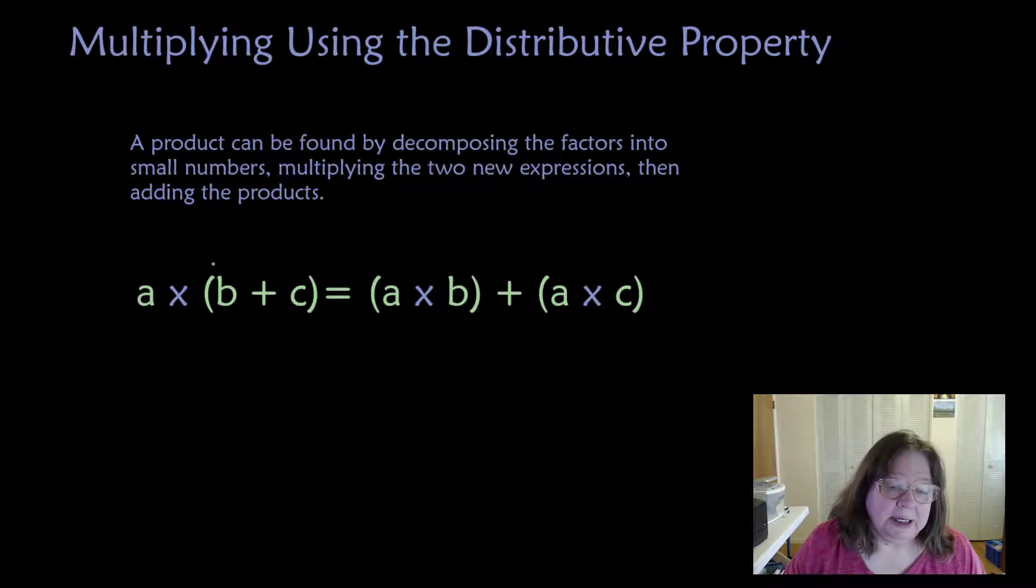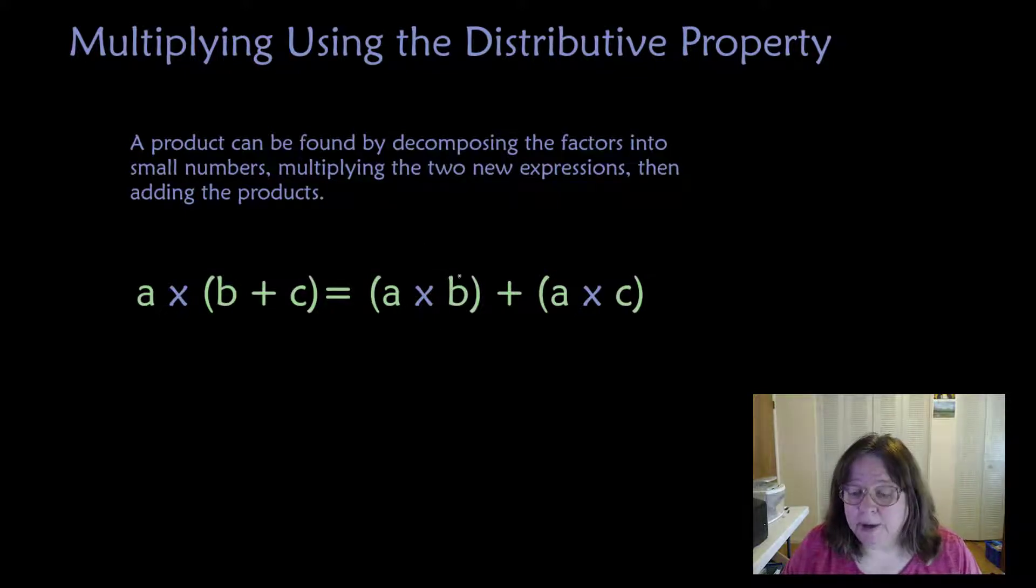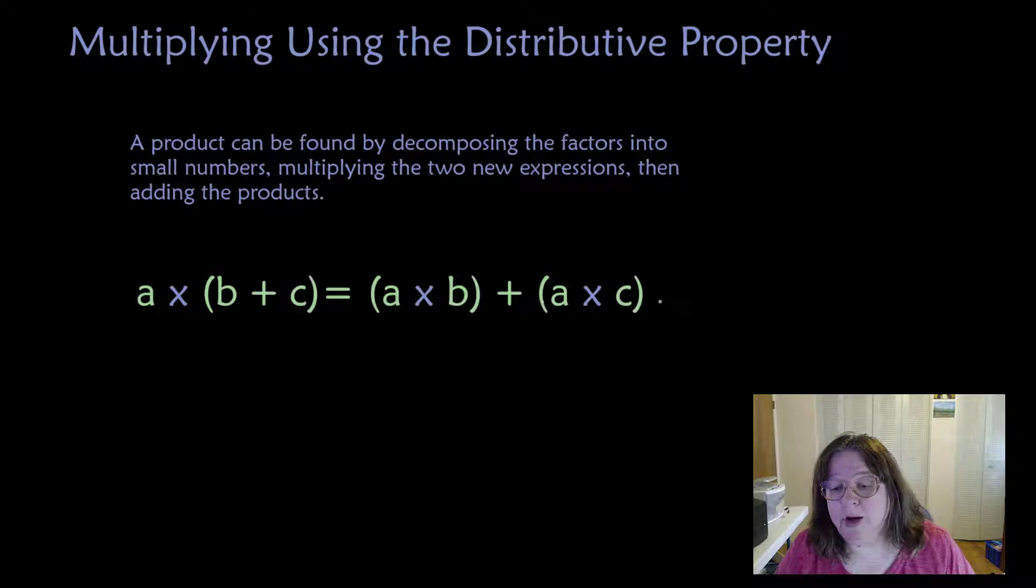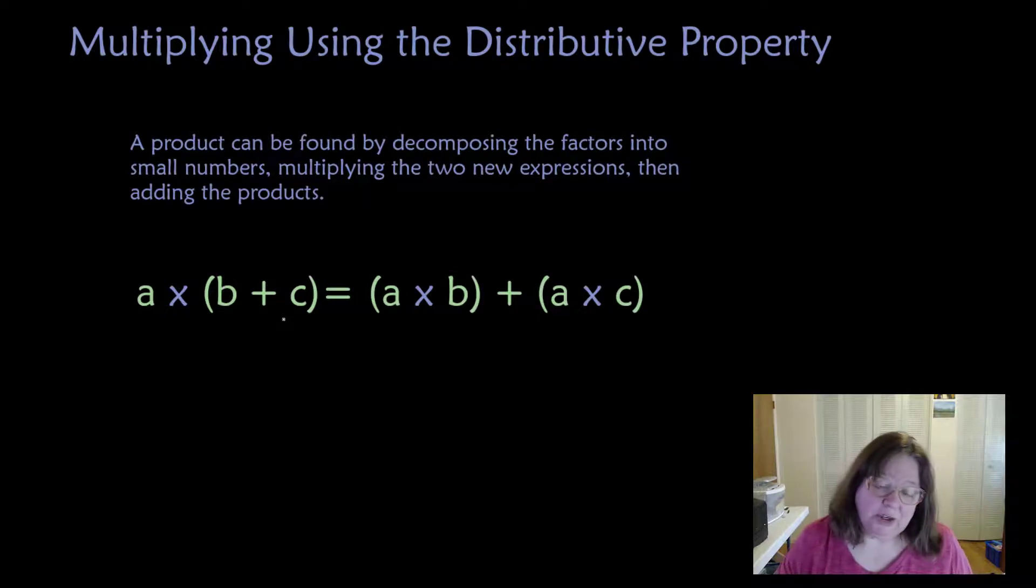Let's look at the rule. It states that when you have a number A times the quantity of B plus C, that is equal to the product of A and B plus the product of A and C. That might have sounded confusing. Let's try it with some smaller numbers, a problem that you already know the answer to, to get an idea how this property works.